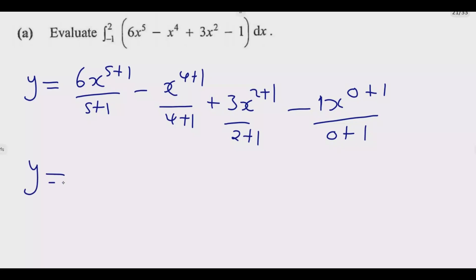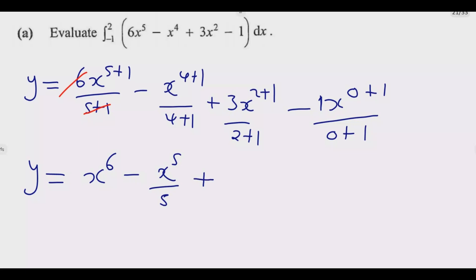Simplifying: 6 divided by 6 gives 1, since 5+1 is 6, so we get x to the power 6. Then minus x to the power 5 over 5. Then 3 divided by 3 gives 1, so plus x to the power 3. And 1 over 1 gives minus x. So our integrated function is x^6 minus x^5/5 plus x^3 minus x.